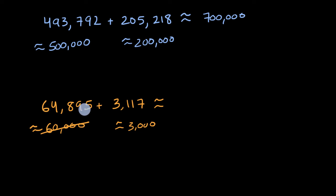So 64,895 to the nearest 1,000 would be 65,000. And then in my head, I would say, okay, 65,000 plus 3,000 is going to be 68,000. So this is going to be approximately equal to 68,000.